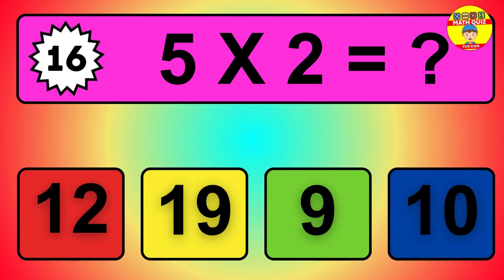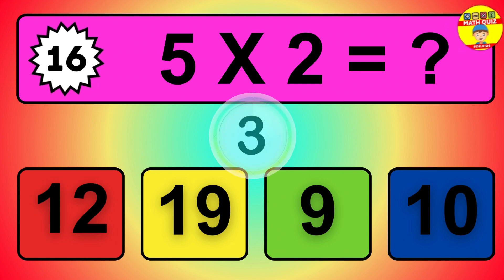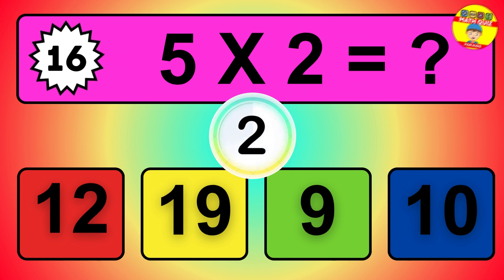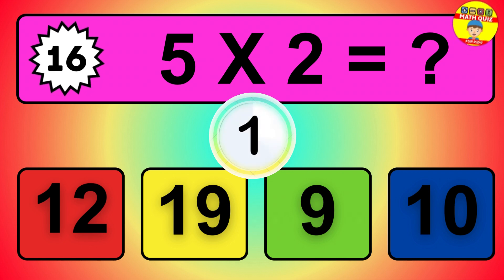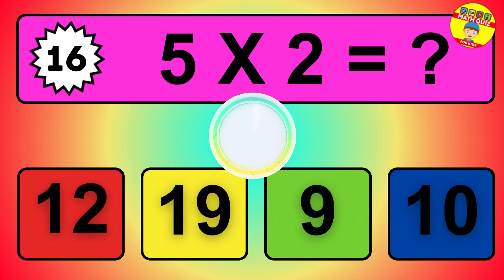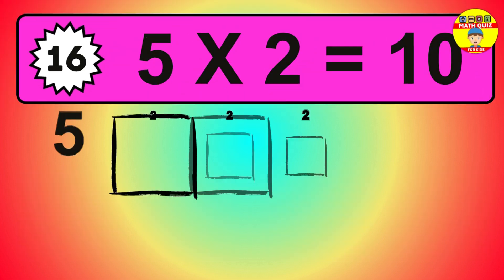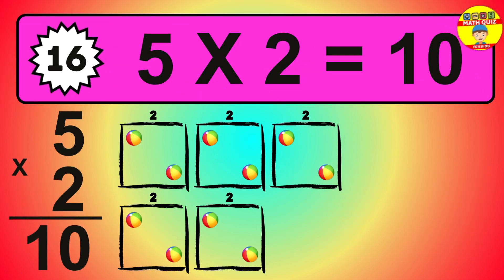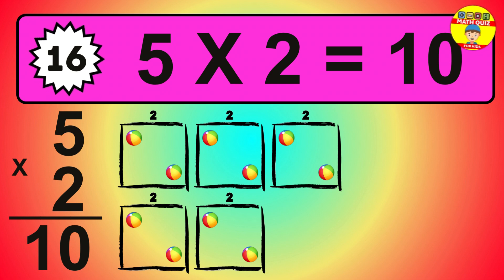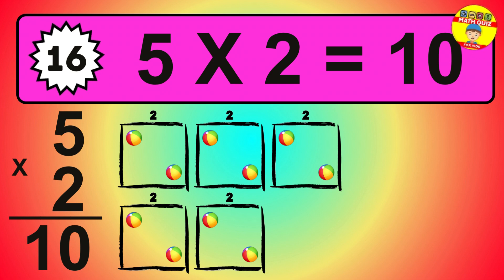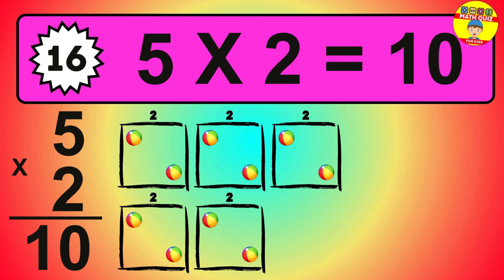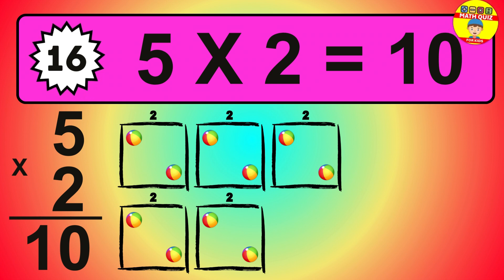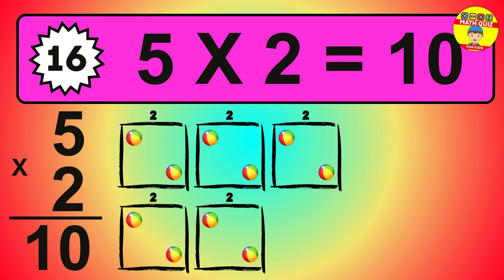Question 16. 5 times 2 equals what? The answer is 5 times 2 is 10. To calculate, we have 5 groups with 2 balls each one. So how many balls do we have? 10 balls.